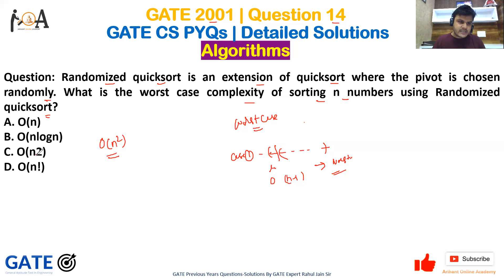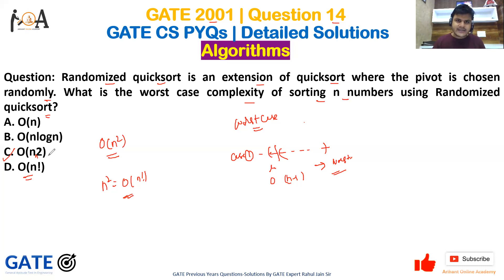So option C — O(n²) — is the correct answer. You might notice that n² is also O(n factorial), as mentioned in option D, but the better and more precise choice is option C. So option C is the correct answer for this GATE question.